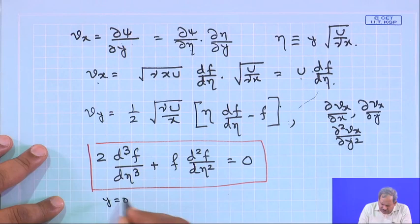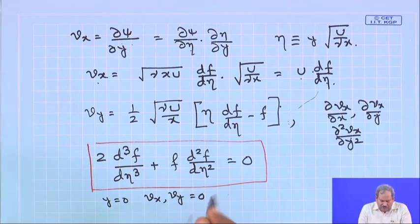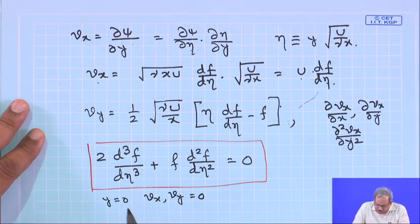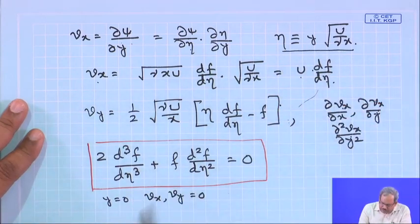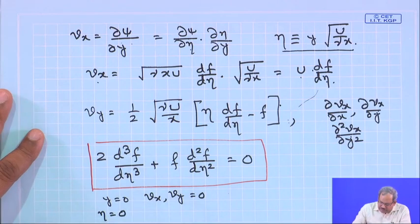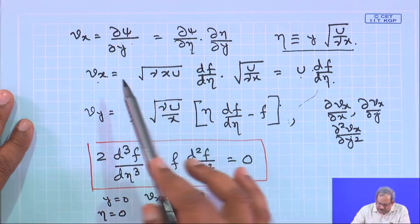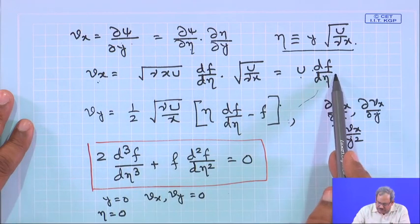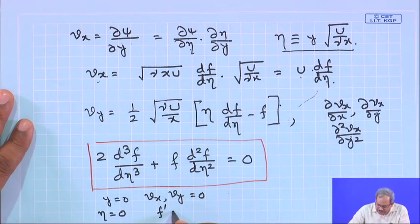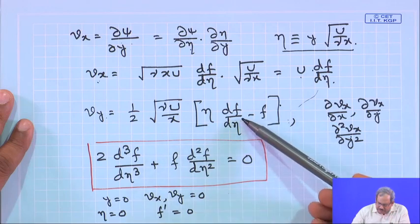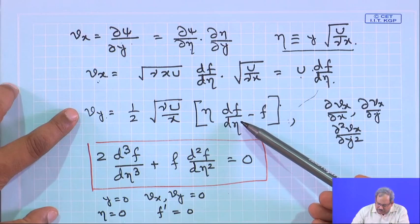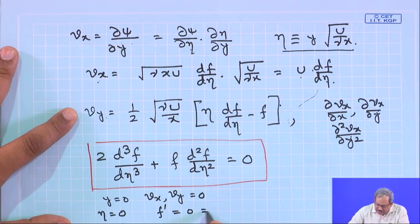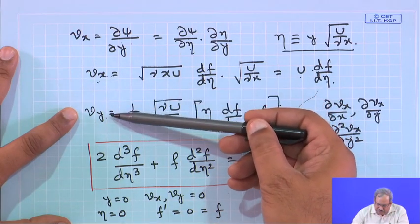Without knowledge of the hydrodynamics inside the boundary layer, one cannot solve the thermal boundary layer. The numerical solution provides a table of values of η along with f, f′, and f″. At η = 0, f = 0, f′ = 0, and the numerical solution gives f″(0) = 0.332. At η = 5, f ≈ 3.283, f′ ≈ 0.992, and f″ ≈ 0.016.